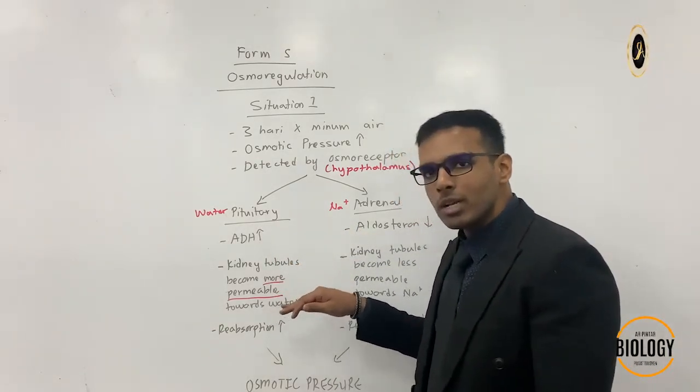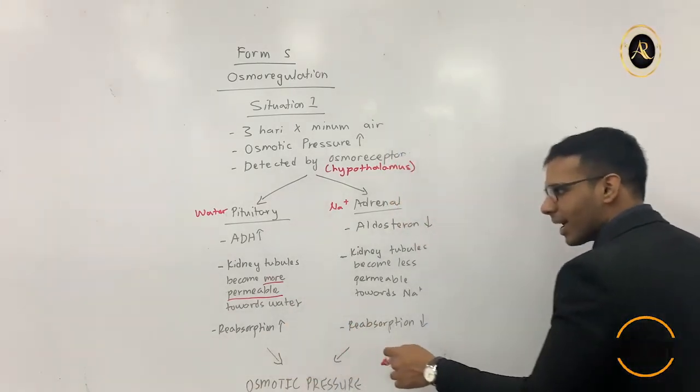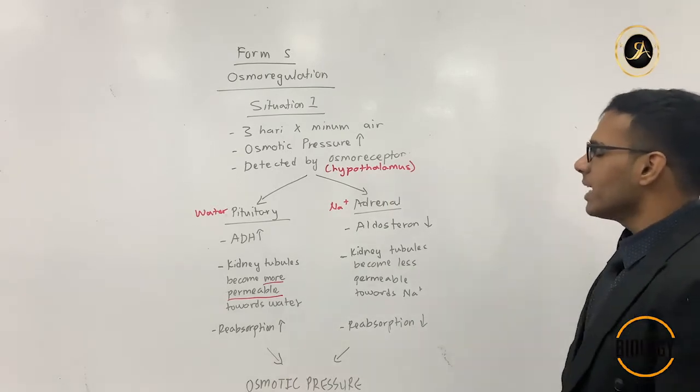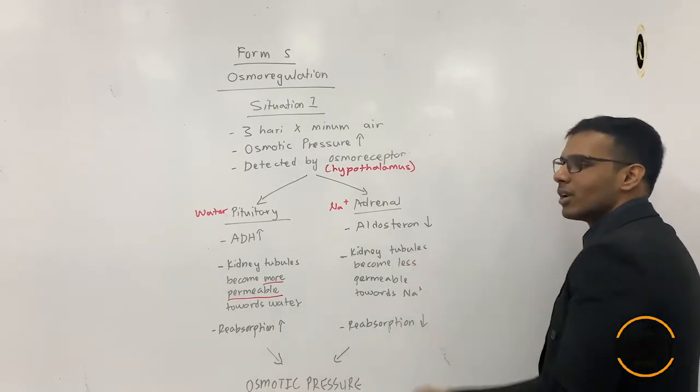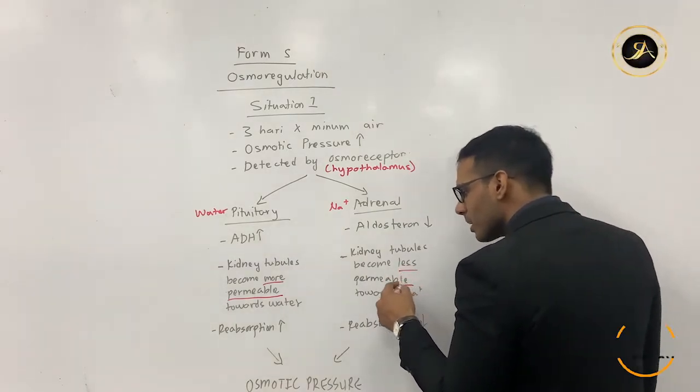This is what pituitary gland does: it will increase the level of ADH causing the kidney tubules to become more permeable towards water, therefore reabsorption of water back into our body will be higher. However, adrenal over here will reduce the level of aldosterone.